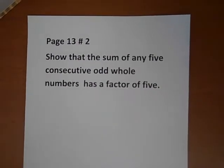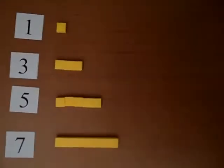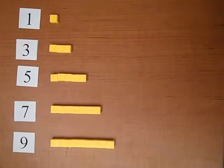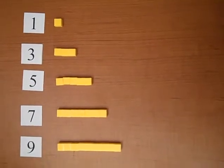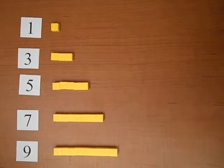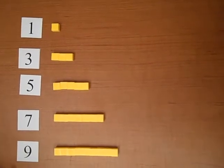So what we're going to do first is we're going to try it with the manipulatives over here. And I've picked out the easiest 5 consecutive odd whole numbers: 1, 3, 5, 7, and 9.